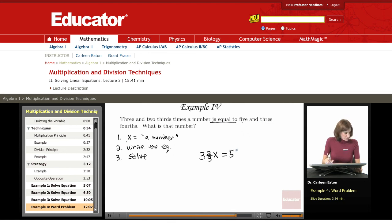Before I go on to solve an equation, I always go back and double-check. Three and two-thirds times a number, so times x, is equal to five and three-fourths.